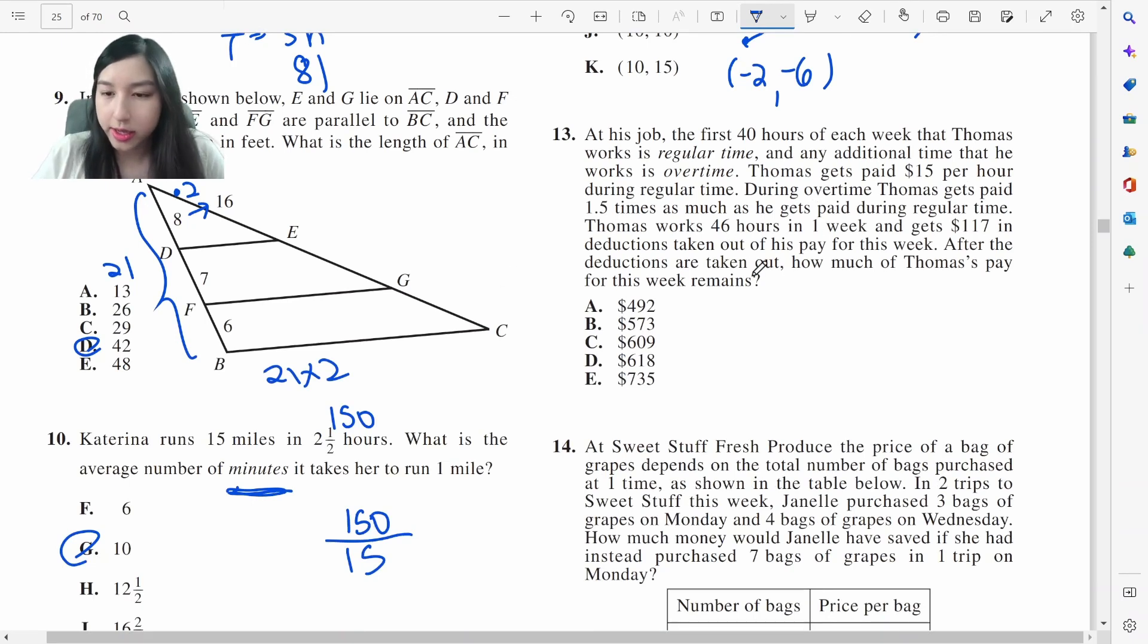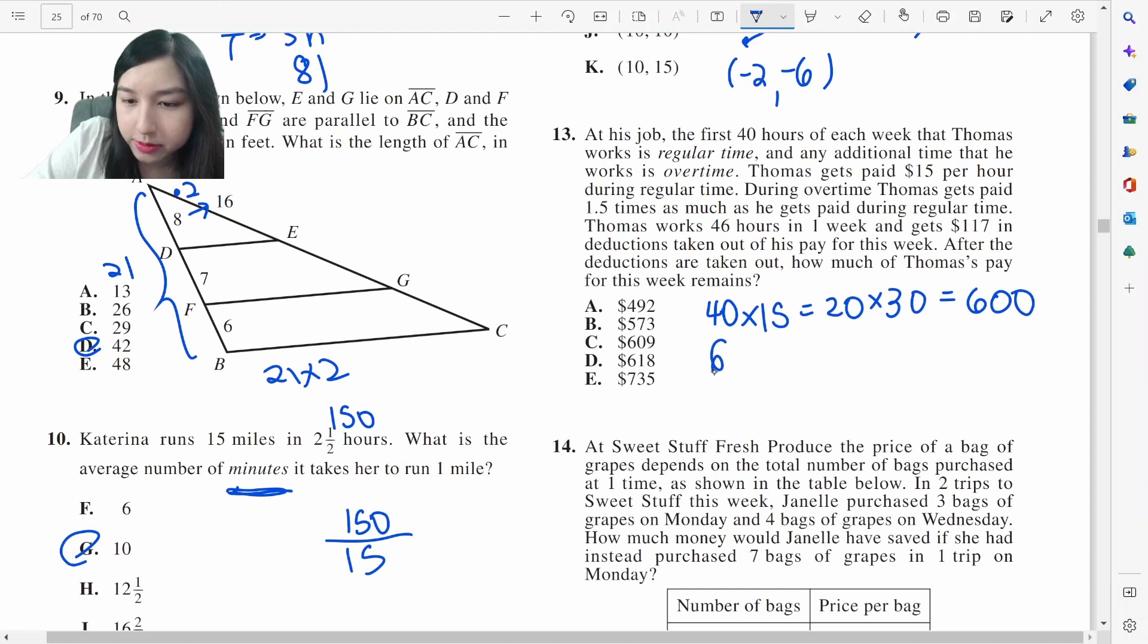After deductions are taken out, how much of Thomas's pay for this week remains? 40 hours is regular. Anything extra is overtime. He gets paid $15 per hour during regular. Overtime is 1.5 times. He worked 46 hours. So 40 hours at $15 per hour is 600. Then he works 6 hours of overtime at $22.50, which is 135. But we're taking out the deductions of $117. So that leaves us with 600 plus 18. D.